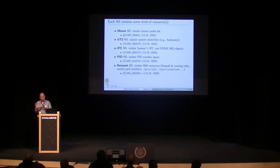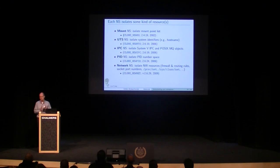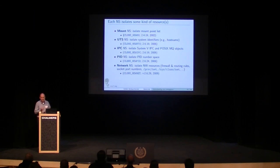UTS namespaces isolate a couple of system identifiers, in particular the hostname. Processes in one UTS namespace instance see a certain hostname; processes in a different UTS namespace see a different hostname. IPC namespaces provide isolation for certain kinds of IPC objects.